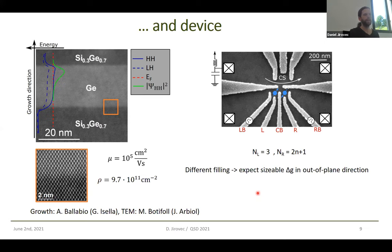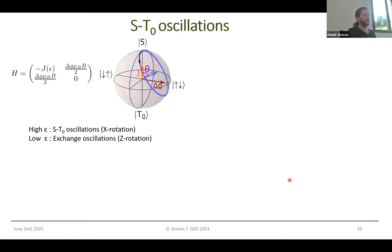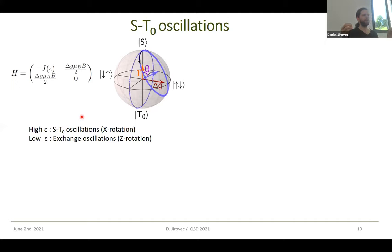We don't actually know how many holes there are in the right dot, but we know that the different fillings should lead to different G-factors in the two dots. So we actually expect a relatively large G-factor difference between the two dots. Looking at singlet-triplet oscillations, we first check the Hamiltonian: we have the exchange interaction giving the splitting between singlet and triplet, and the G-factor difference between the two dots appearing in the off-diagonal term.